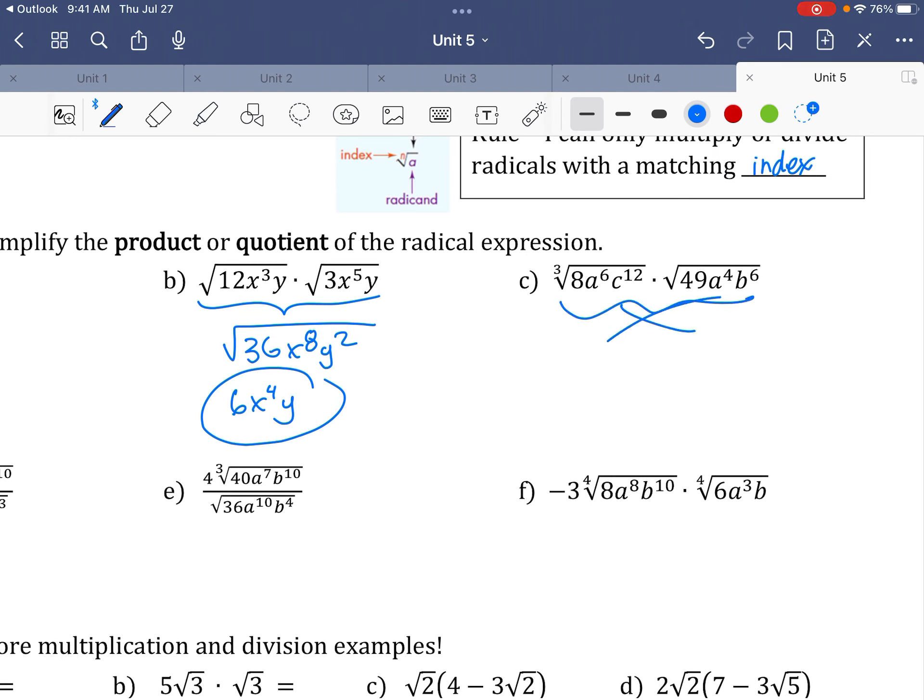On letter C, like I said, I can't put this together. I cannot put it together right now, because one's a square root and one's a cube root, okay? So I have to work on this one and work on this one separately. So cube root of 8 is 2. 3 goes into 6 twice. 3 goes into the C12 four times. Times, I get 7a squared b to the third over here.